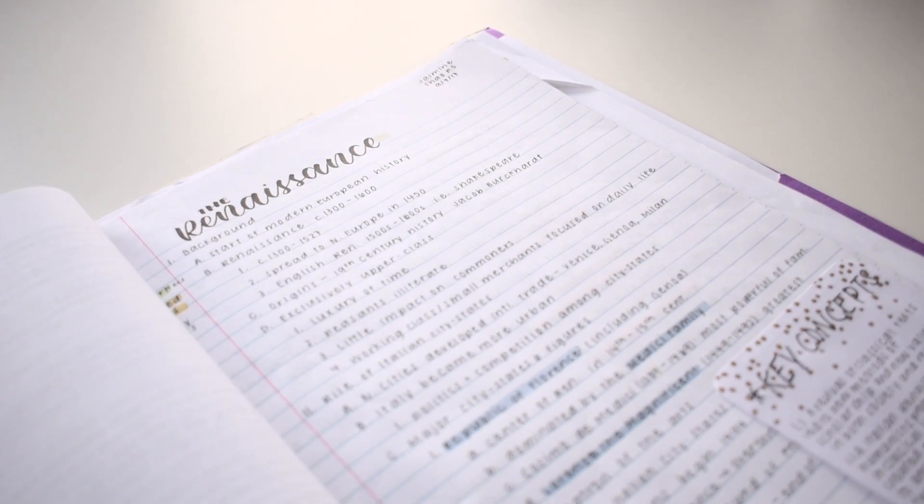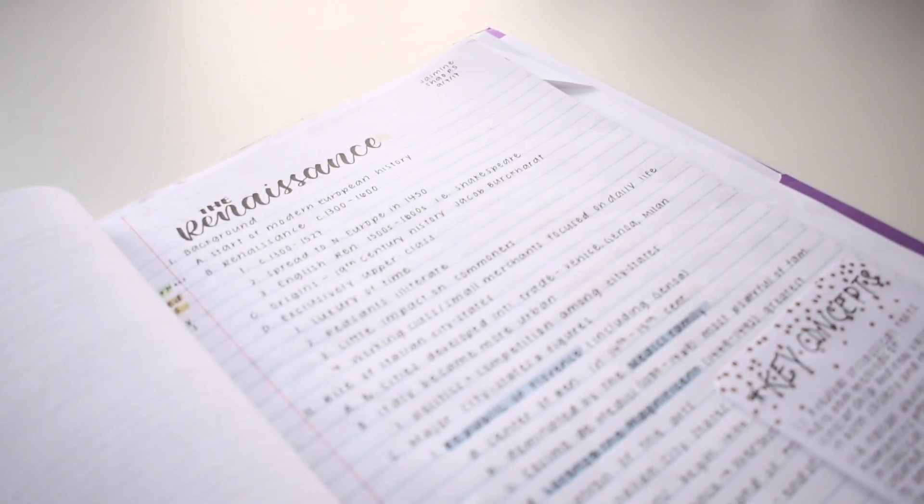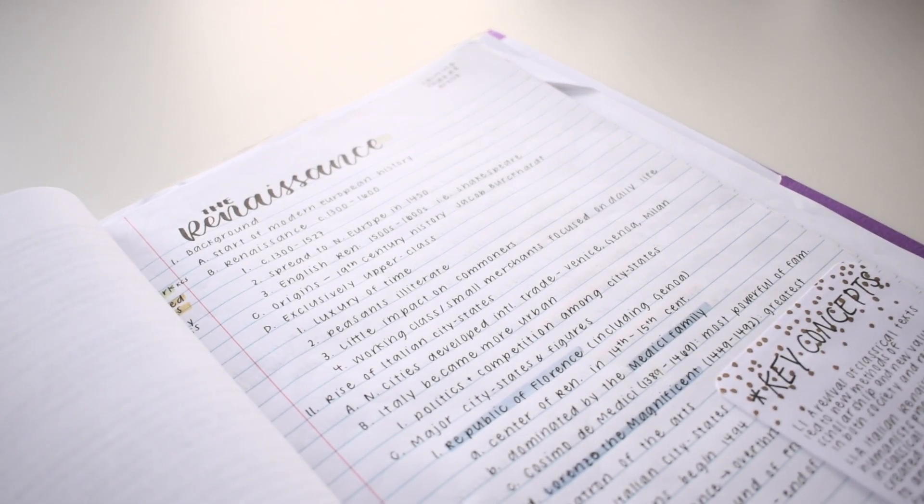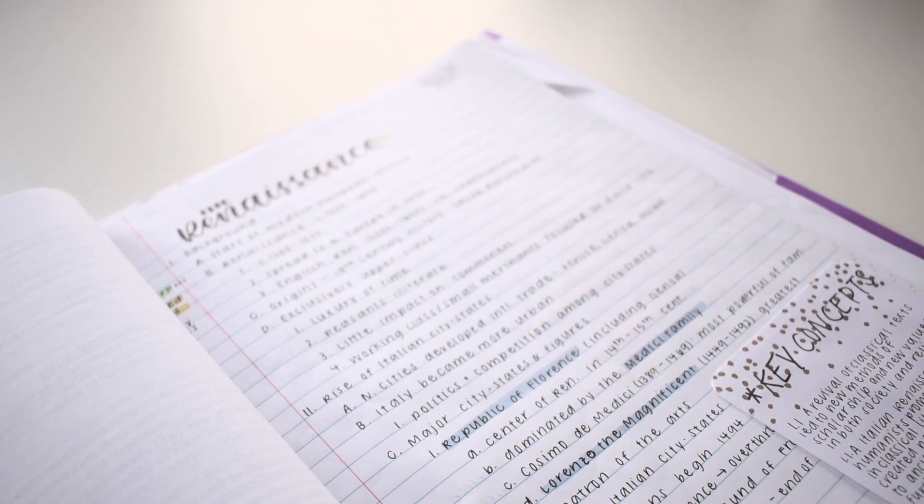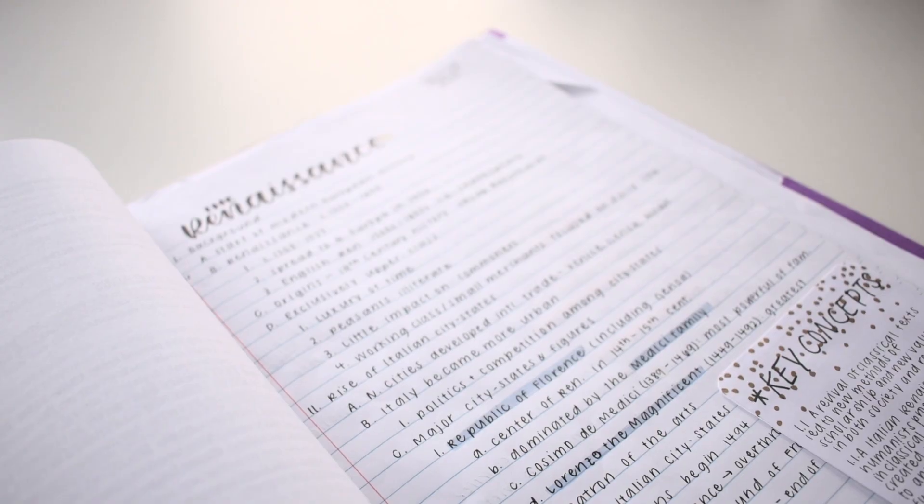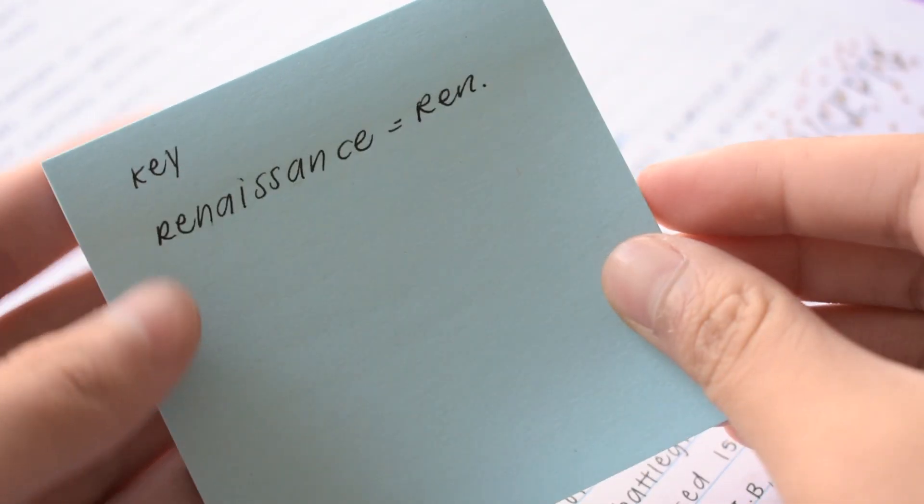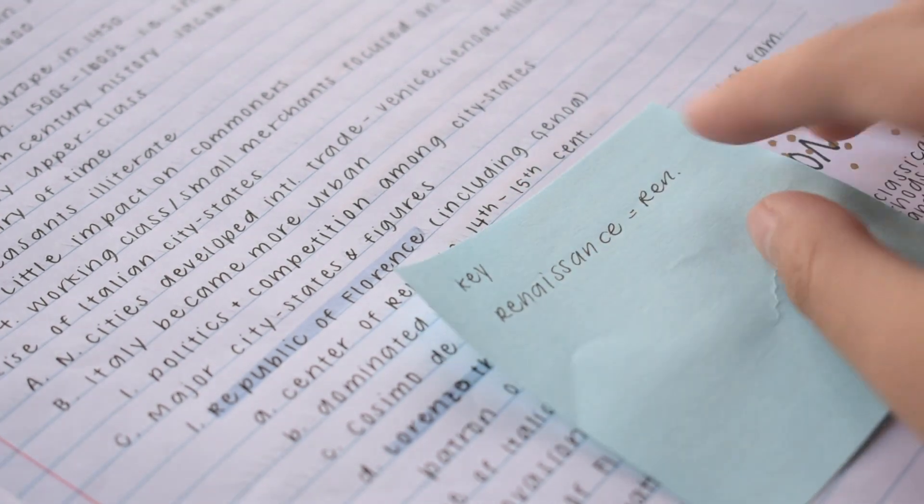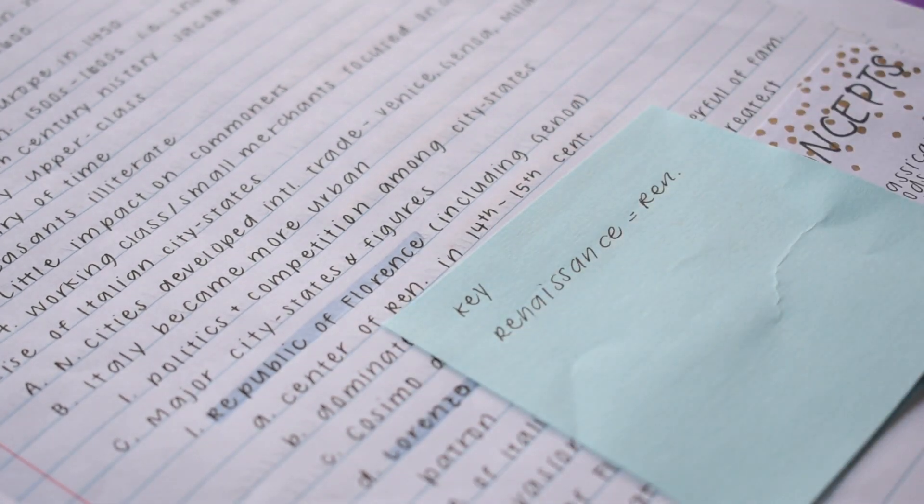For certain topics, there are also words that you use a lot. For example, in these notes, I use the word Renaissance a lot because that's the main topic. Instead of writing out these words over and over, make up your own abbreviation for it. Then write a note on your notes so that you know what it means when you're reviewing later.